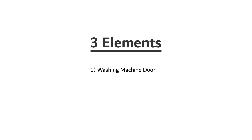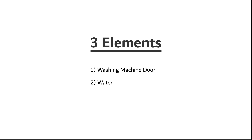We now have three elements for this logo: the first one is the door of the washing machine to represent laundry services, the second one is water to represent the washing machine in running process, and the third one is a hanger to represent dry cleaning services. And this is the logo that I designed using these three elements.